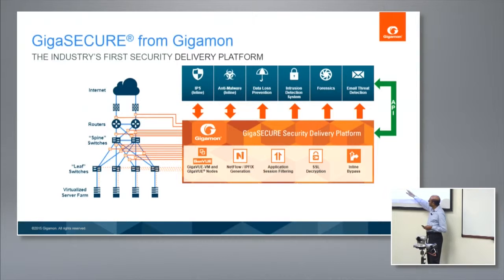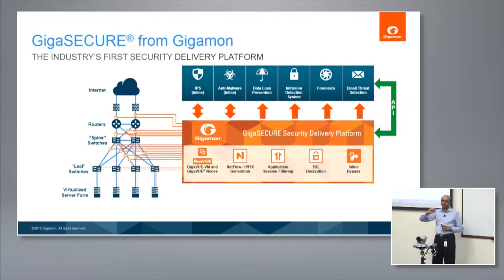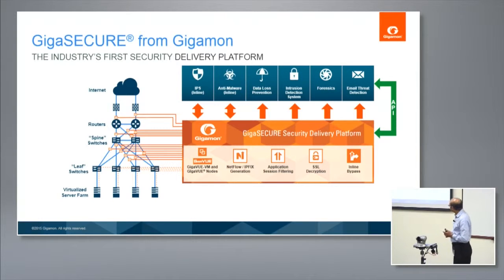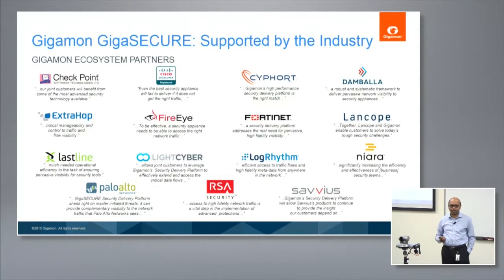To support GigaSECURE, we have GigaVUE nodes that provide network-wide reach — physical or virtual. We have a very sophisticated high-performance NetFlow and IPFIX generation — note this is generation, not collection, of records. We can take in network traffic from any network and generate NetFlow or IPFIX records on behalf of the network, along with application session filtering, SSL decryption, and inline bypass, supported by APIs.